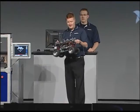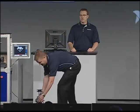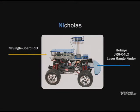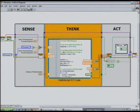I'd like to introduce you and our guests this morning to Nicholas. He's a ground-based autonomous vehicle that's controlled by a single-board RIO and outfitted with a Hokuyo laser LiDAR rangefinder. We've implemented an obstacle-avoidance algorithm on the robot and deployed it to the real-time hardware using a MathScript node, LabVIEW's native compiler for your .m files. The program running on the robot has three main parts: Sense, Think, and Act.